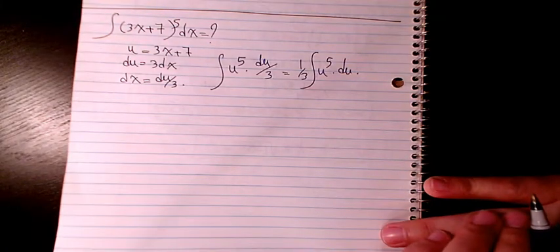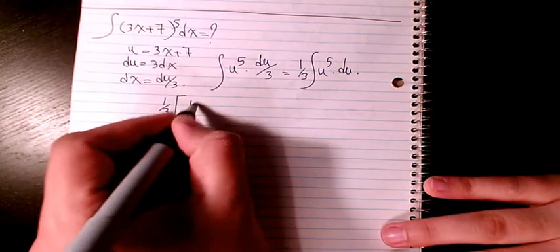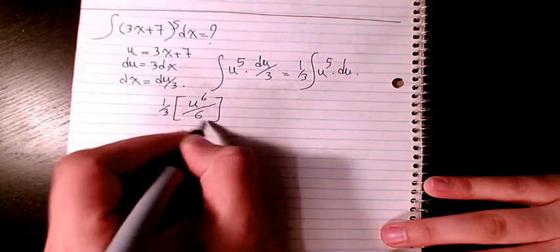When you integrate it, it's going to be 1 over 3 u to the power of 6 divided by 6 plus c.